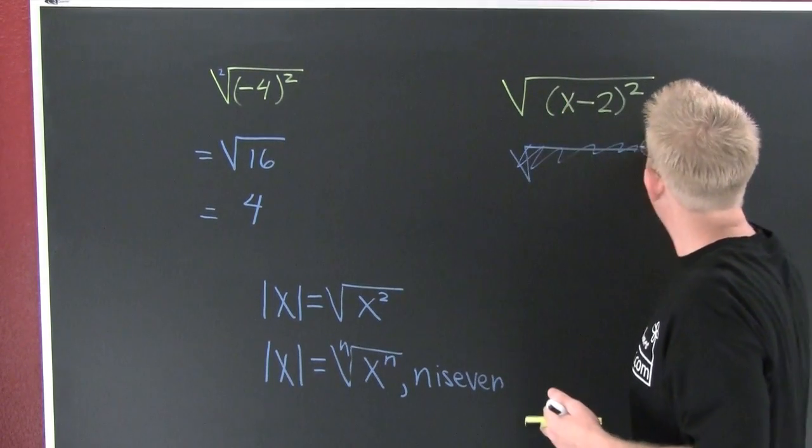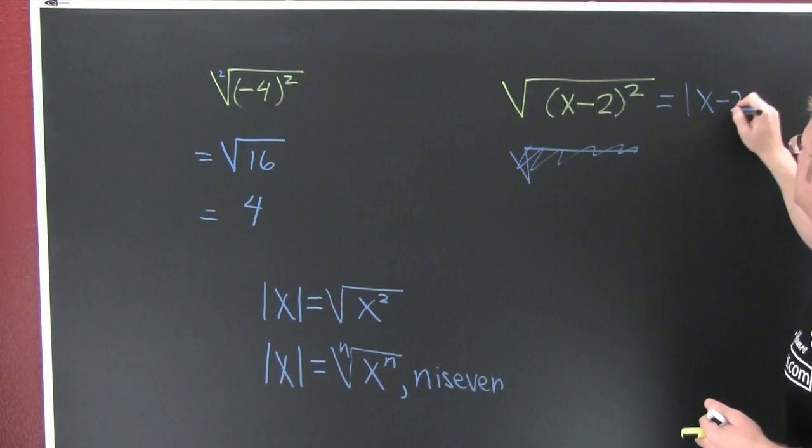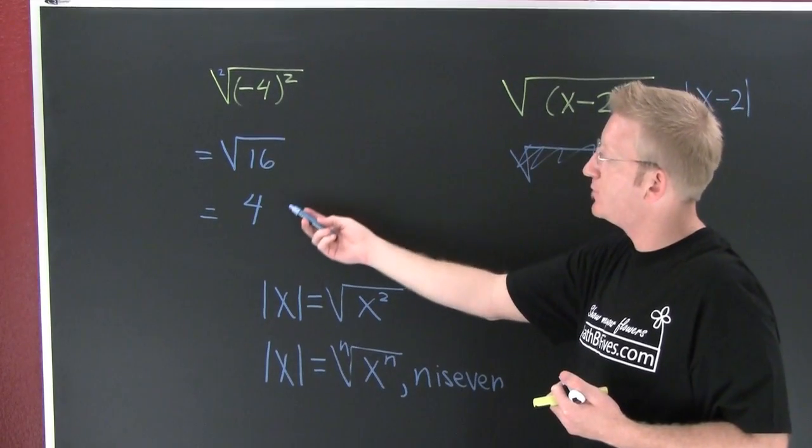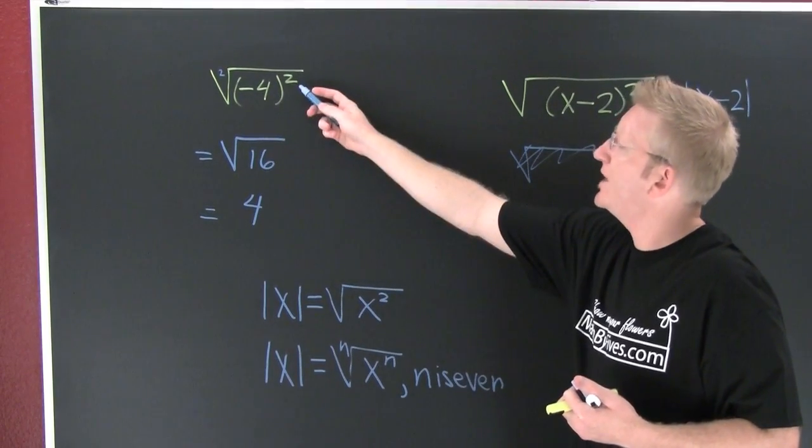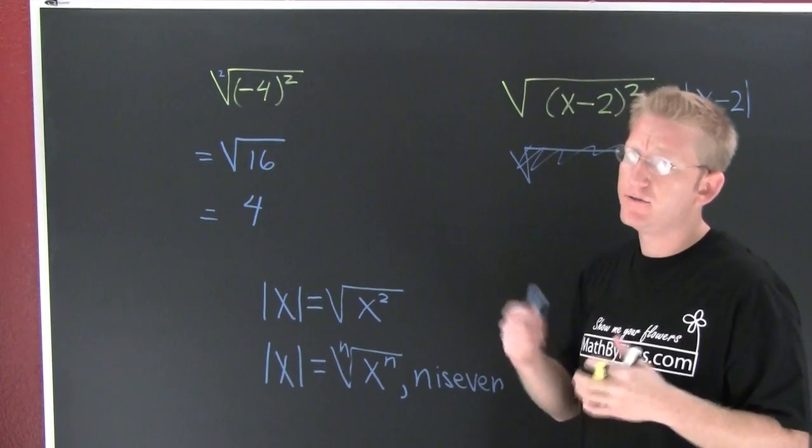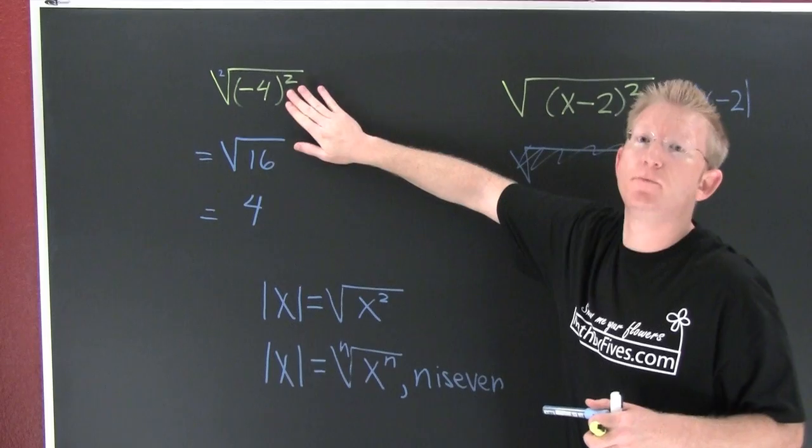So then, that's going to return absolute value of x minus 2. Why? Because like over here in this example, when I square it, it's going to take whatever's on the inside and make it positive. Because they're going to have the same sign. It's either going to be minus times minus or plus times plus.